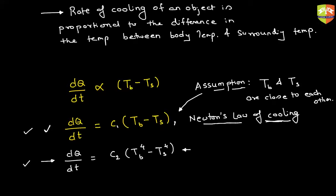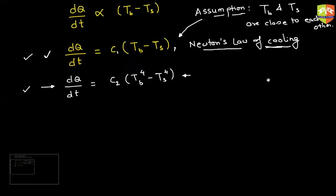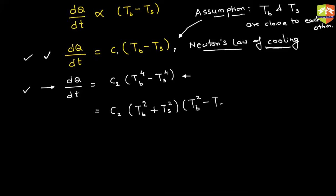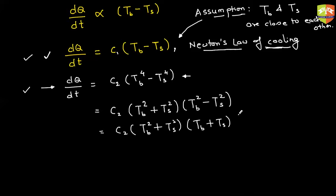Now how can I get Newton's Law of Cooling from the Stefan-Boltzmann law? You can rearrange the term: TB⁴ minus TS⁴ is a difference of squares, so you can write it as (TB² + TS²)(TB² - TS²), which further simplifies as (TB² + TS²)(TB + TS)(TB - TS). So DQ/DT can be written in that factored form.